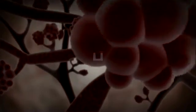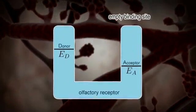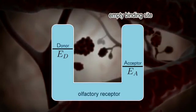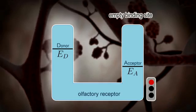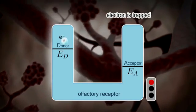The idea is actually very simple. Imagine an olfactory receptor without an odorant molecule inside. It is believed that the receptor has two sides: a so-called donor side and an acceptor side. The donor side initially has an electron which tries hard to get to the acceptor side.